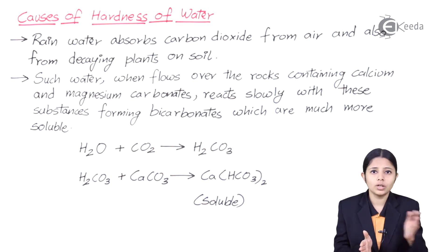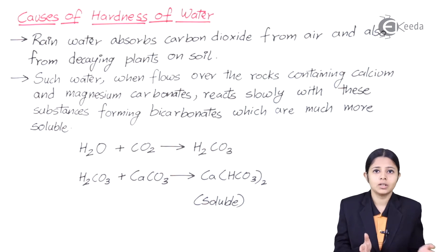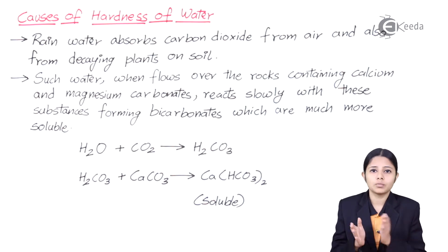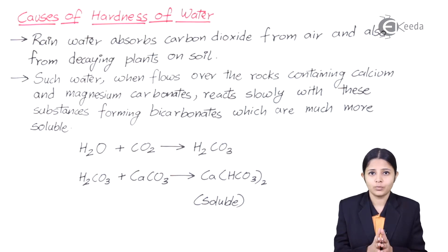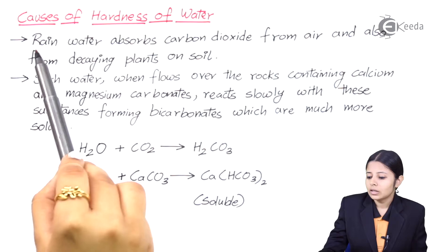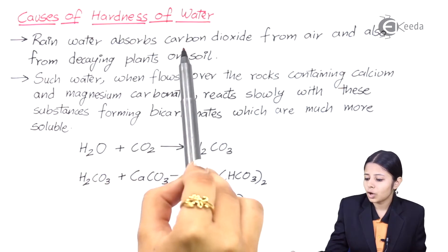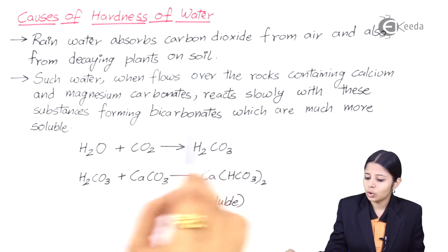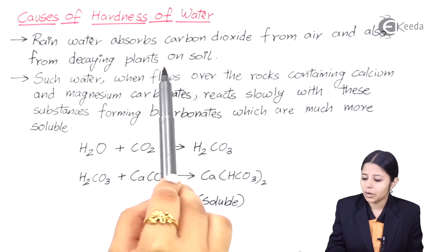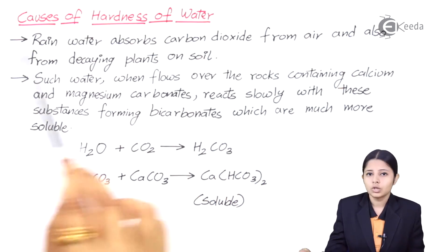Once you remove all the impurities, the hard water becomes soft water. So let us see all the reactions and processes which take place for hard water. Rain water absorbs carbon dioxide from air and also from decaying plants on soil.